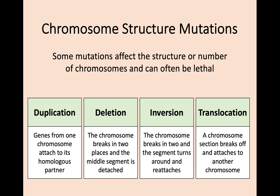The other mutations we want to look at now are chromosome structure mutations. These are on a bigger scale — if you affect the entire chromosome, that's going to have a much bigger impact and can also just be lethal. There are four different types of chromosome structure mutations: duplication, deletion, inversion, and translocation.